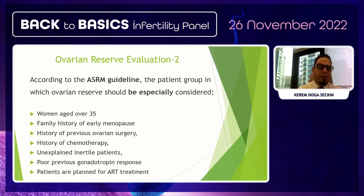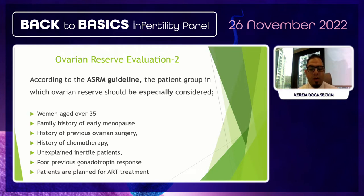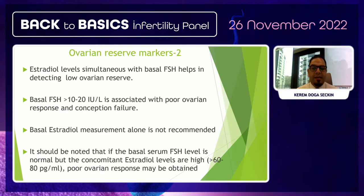Age is the most important factor for ovarian reserve. The quality and quantity effects on ovarian reserve decline with age, especially accelerating at 35 years old. According to ESHRE guidelines, ovarian reserve should especially be considered in women over 35, with a family history of early menopause, previous ovarian surgery, chemotherapy, unexplained infertility, or poor previous gonadotropin response.